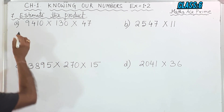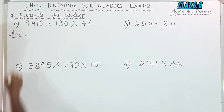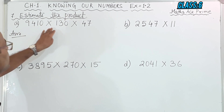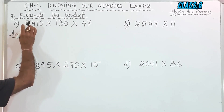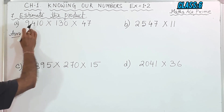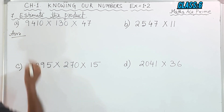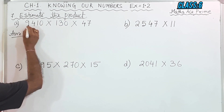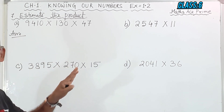Now, if this is the sum — 9,410 into 130 into 47 — so how will we solve this? This is a 4-digit number. So we will look at the 1, 10, 100, 1000 places. For 9,410, if I want to round off in the 1,000 place, we will see the previous digit, that is 4, which is less than 5.